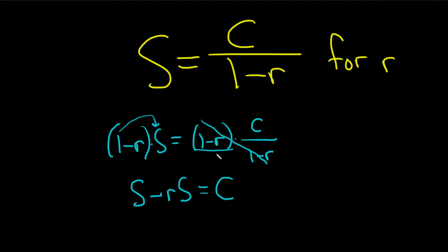Remember, this is over 1, so it's really like this — you can think of it that way, and so the denominator goes away. You just get 1.